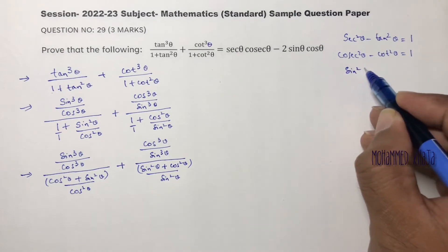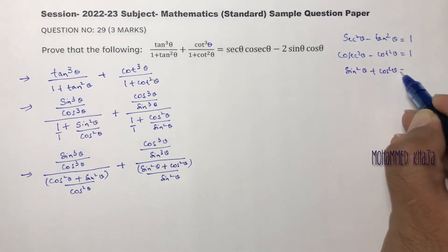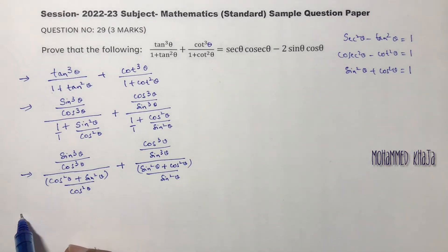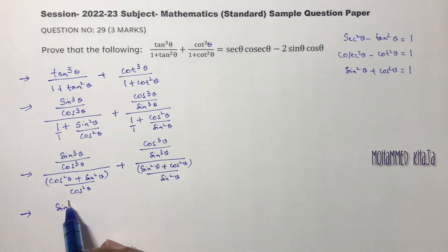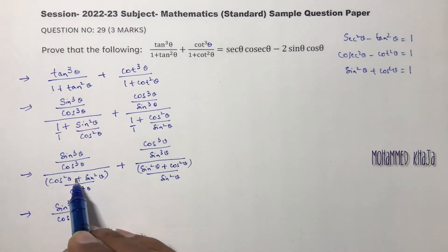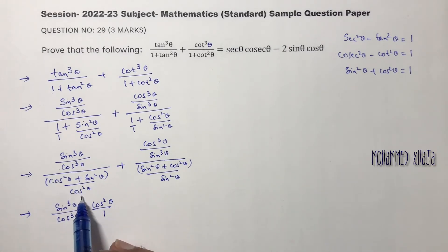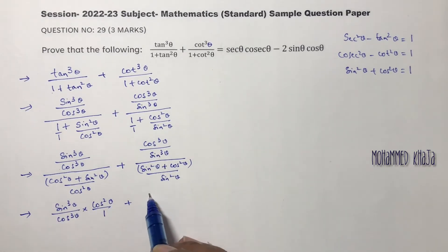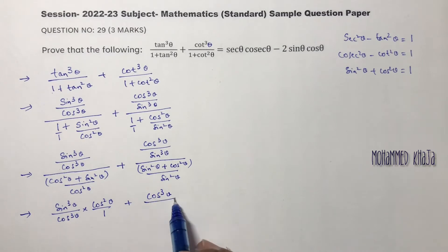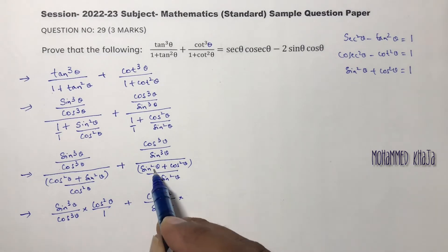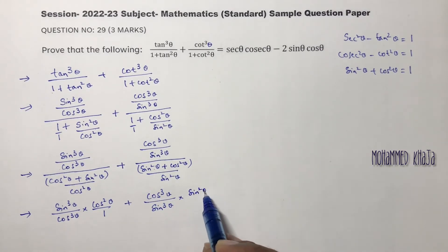After simplification the denominator becomes cos square theta. According to the identity sin square theta plus cos square theta equals 1, this denominator value is 1. So sin cube theta by cos cube theta divided by 1 over cos square theta becomes sin cube theta by cos cube theta multiplied by cos square theta by 1 (reciprocal). Similarly, cos cube theta by sin cube theta multiplied by sin square theta by 1.